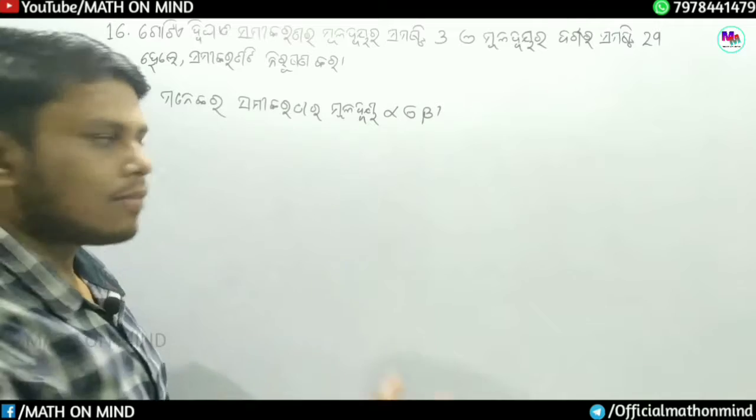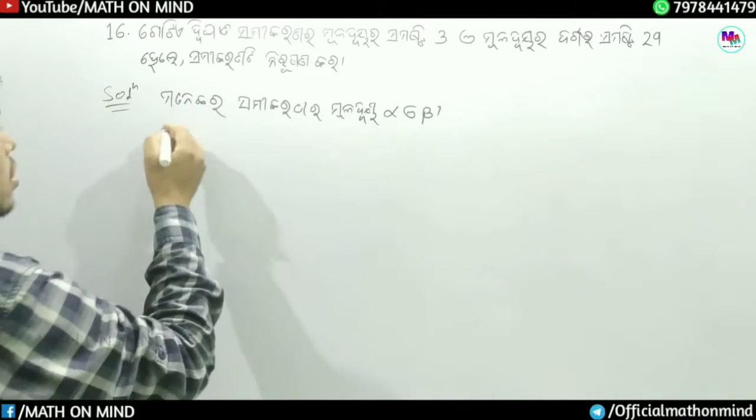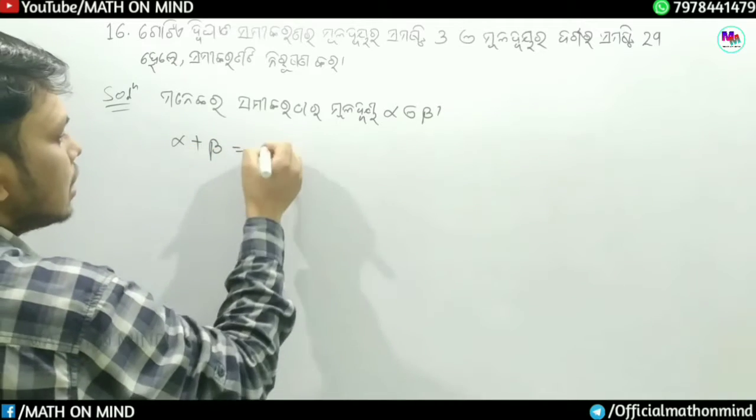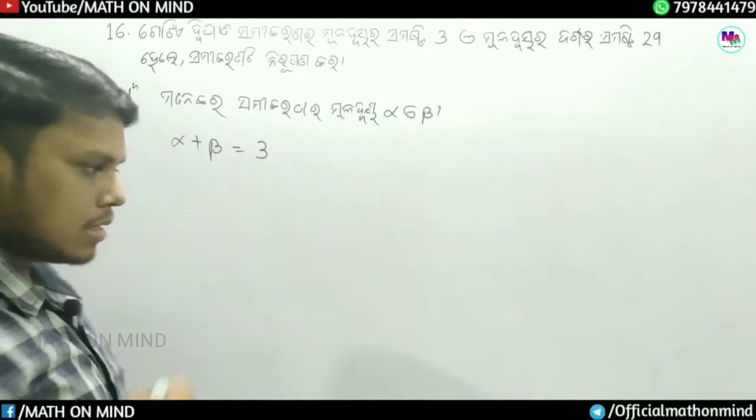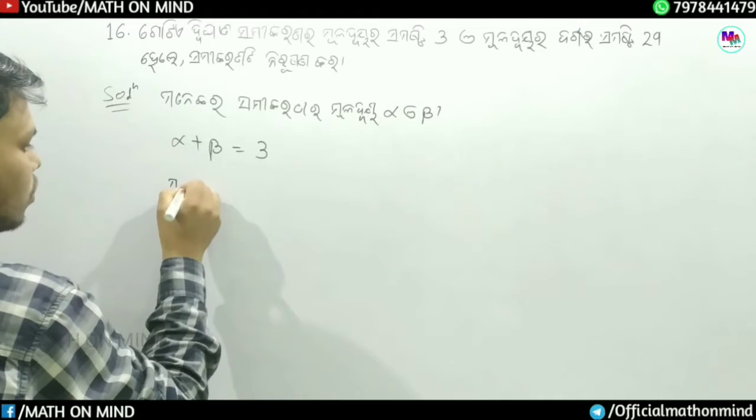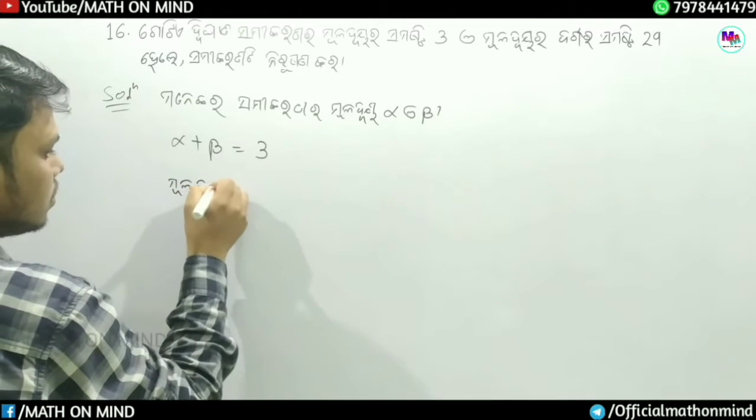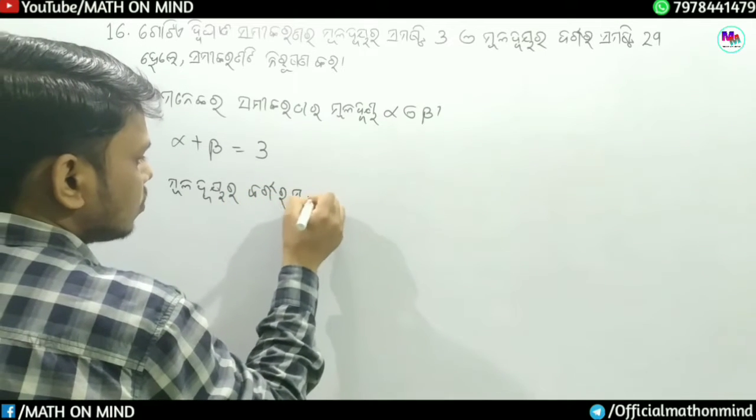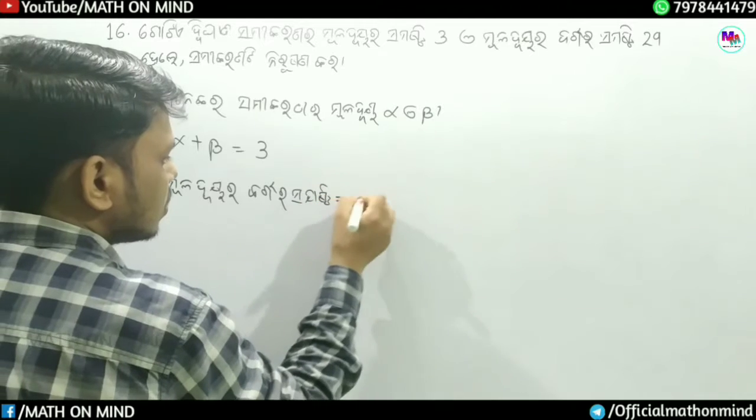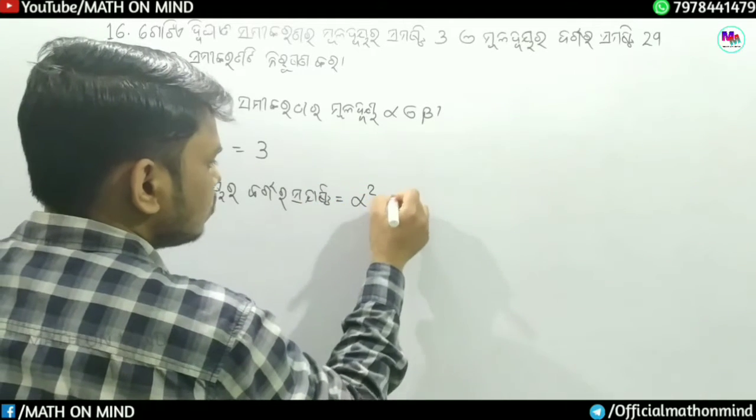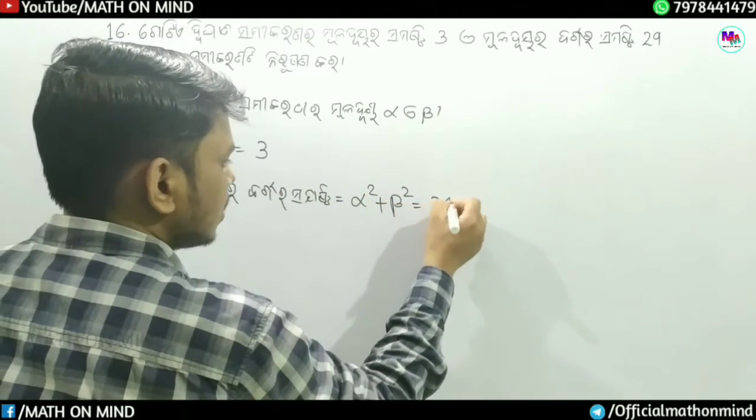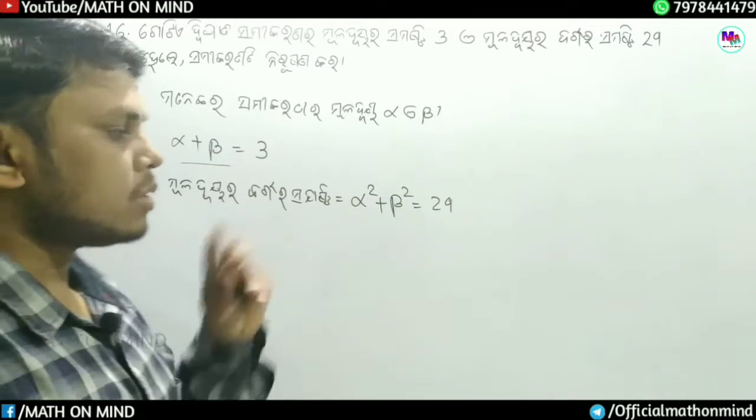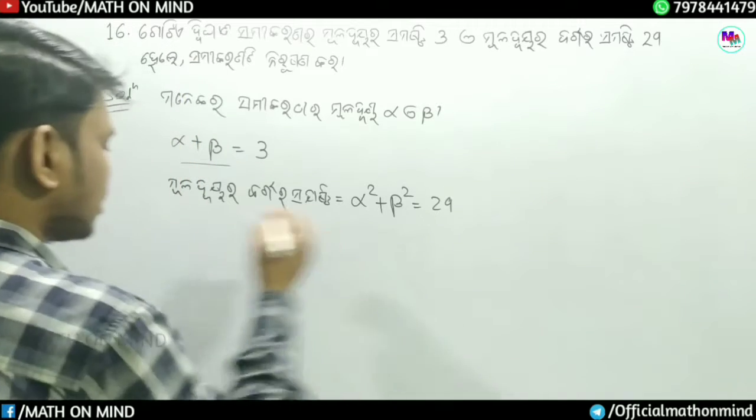For this problem, alpha plus beta is equal to 3. Now, alpha square plus beta square is equal to 29. From the formula, alpha plus beta whole square minus 2 alpha beta.